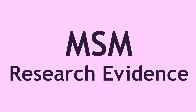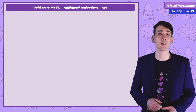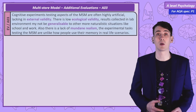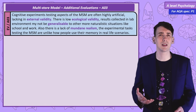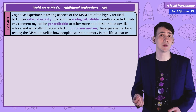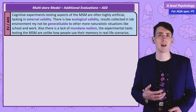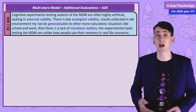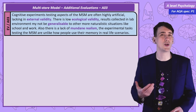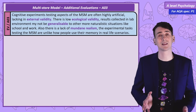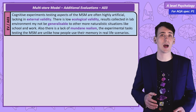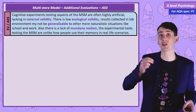Additional evaluations of the multi-store model. One of the most obvious evaluations is that much of the research outlined seems like a very artificial way of testing memory — not really like how we use memory in day-to-day life. The lab environment itself is unusual, not reflecting the places we recall in, like school and work, so findings lack ecological validity. The tasks participants complete are often unlike real-world tasks, meaning they lack mundane realism. This questions the external validity of the research.